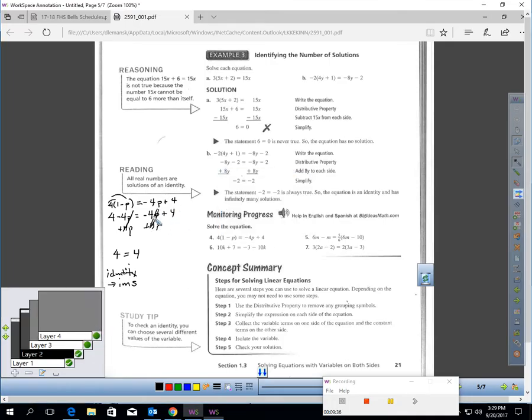If I cancel these and I add 4p over here, look what happens. Negative 4p plus 4p cancels also, and I'm left with 4 on the left equals 4 on the right. That's true. This is identity, and I put IMS, which means infinitely many solutions. This problem has infinitely many solutions.